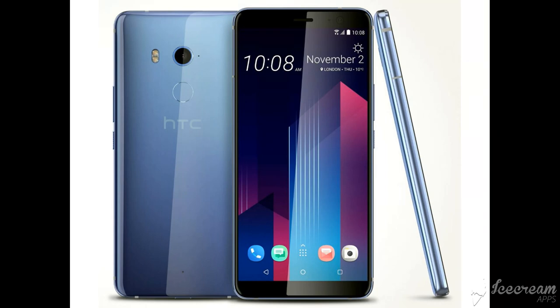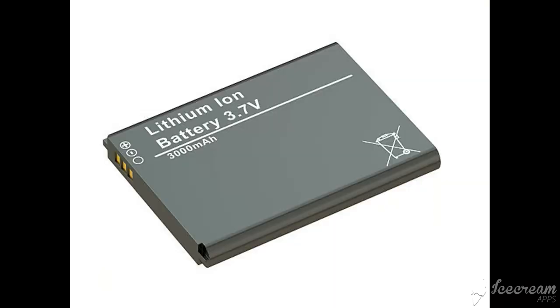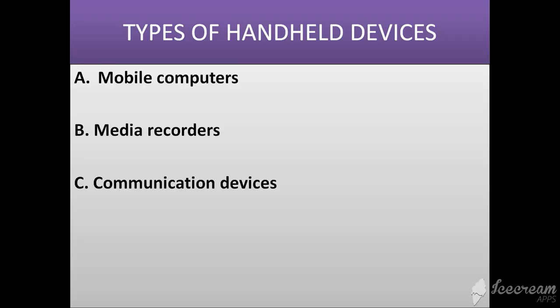Handheld devices are powered by dry-cell lithium batteries and increasingly use a touch screen interface. There are typically three types of handheld devices: mobile computers, media recorders, and communication devices. Let's see each of them briefly.